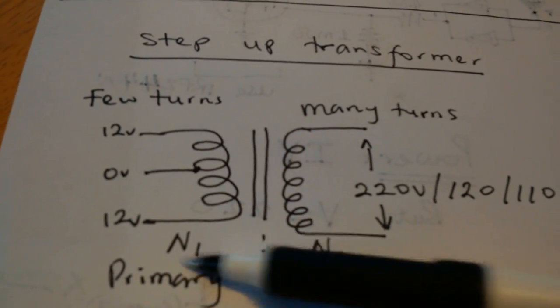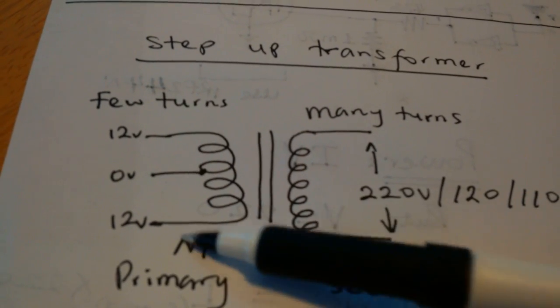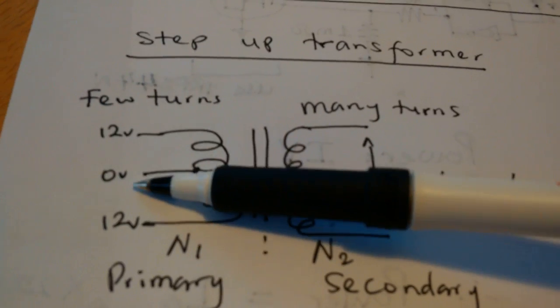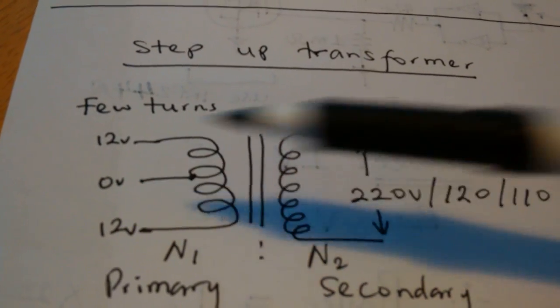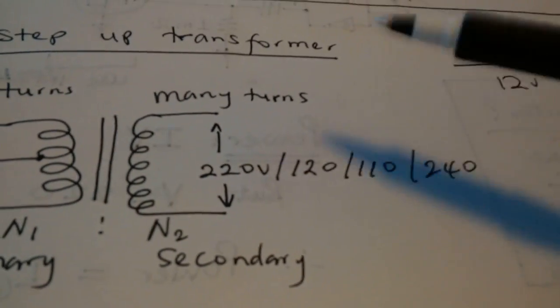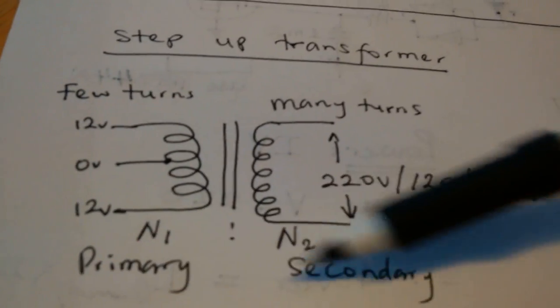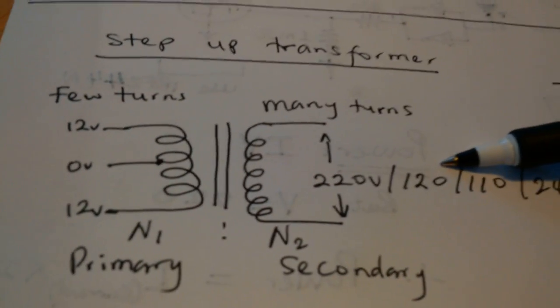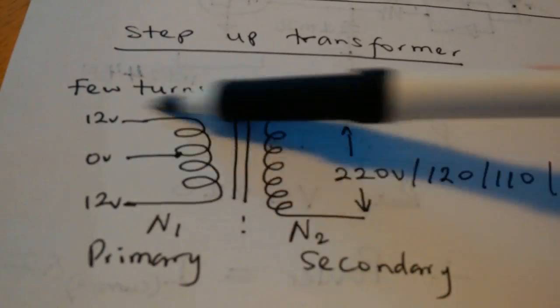The primary turns ratio versus the secondary turns ratio determines your step-up factor. So in this case you're using a 12 volts transformer but the output could be 220, 120, 110 or 240. Whatever voltage you want to have at the output. Make sure that the turns ratio corresponds to the expected output from the given input.